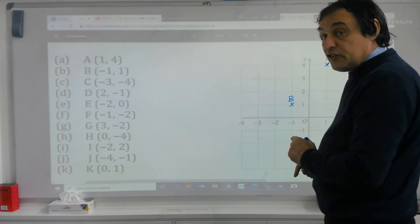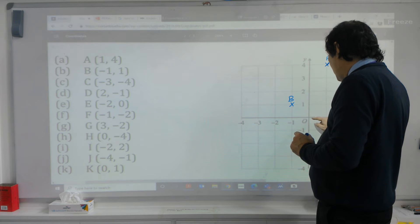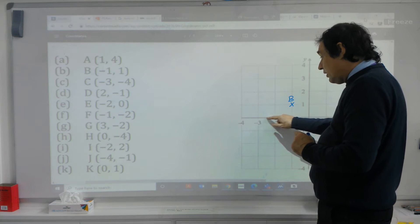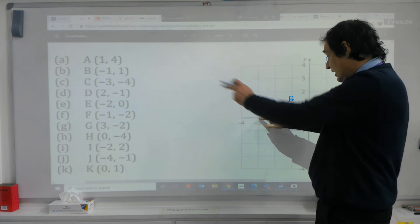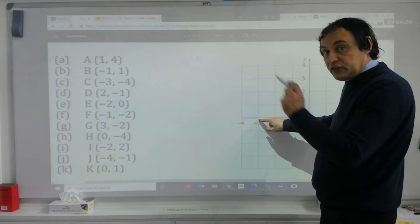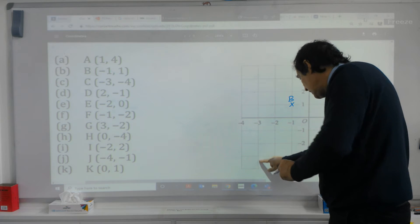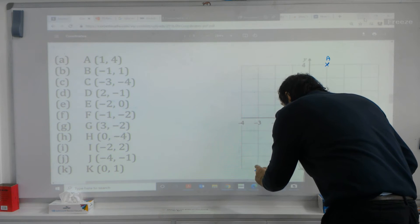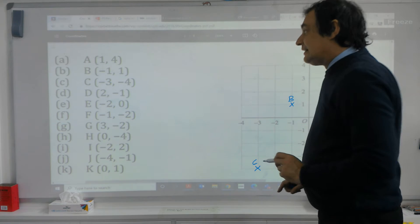C is minus three minus four. So we go along to minus three, and that's to the left. And this minus four means we actually have to go down four. So we're going to go down four, and then that will give us C.